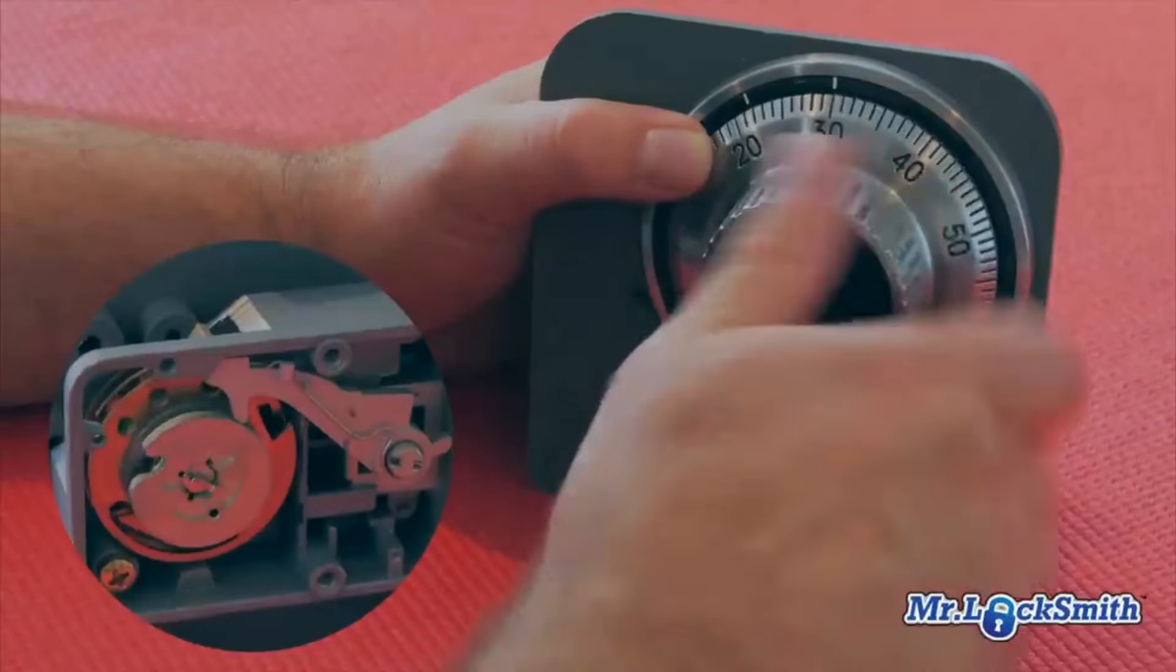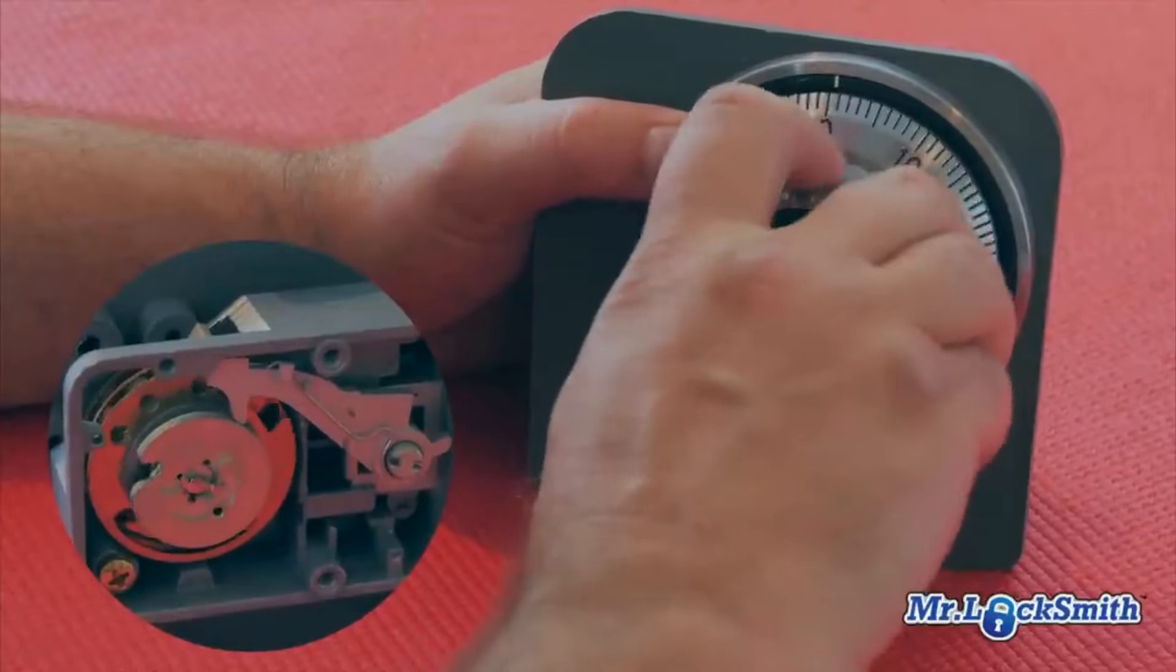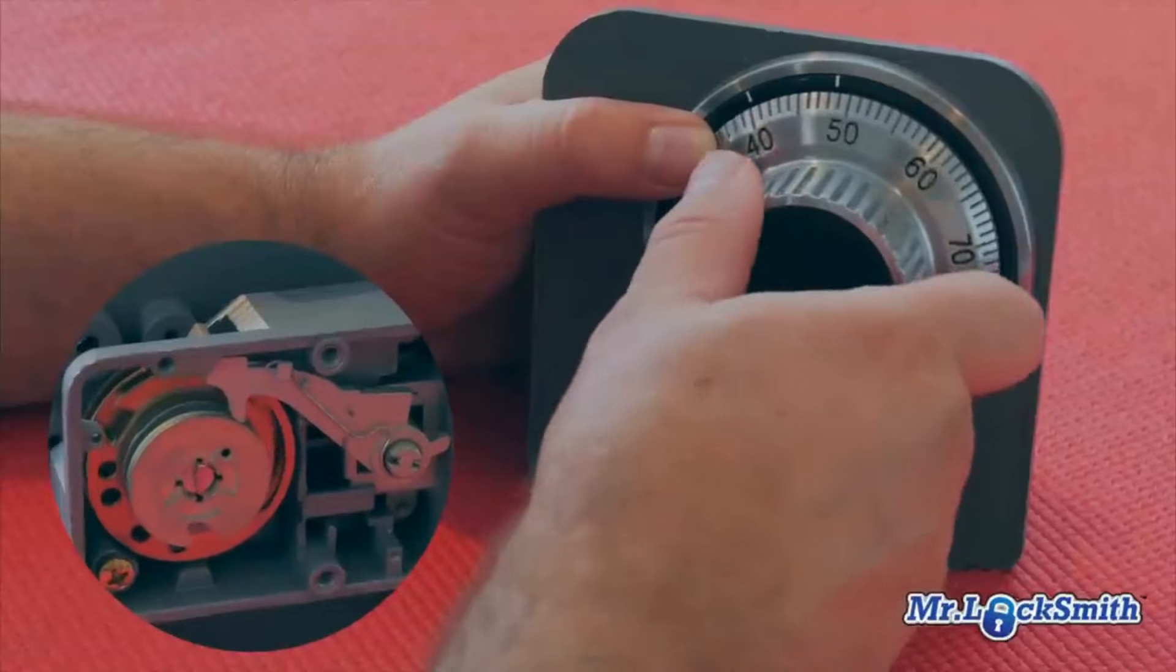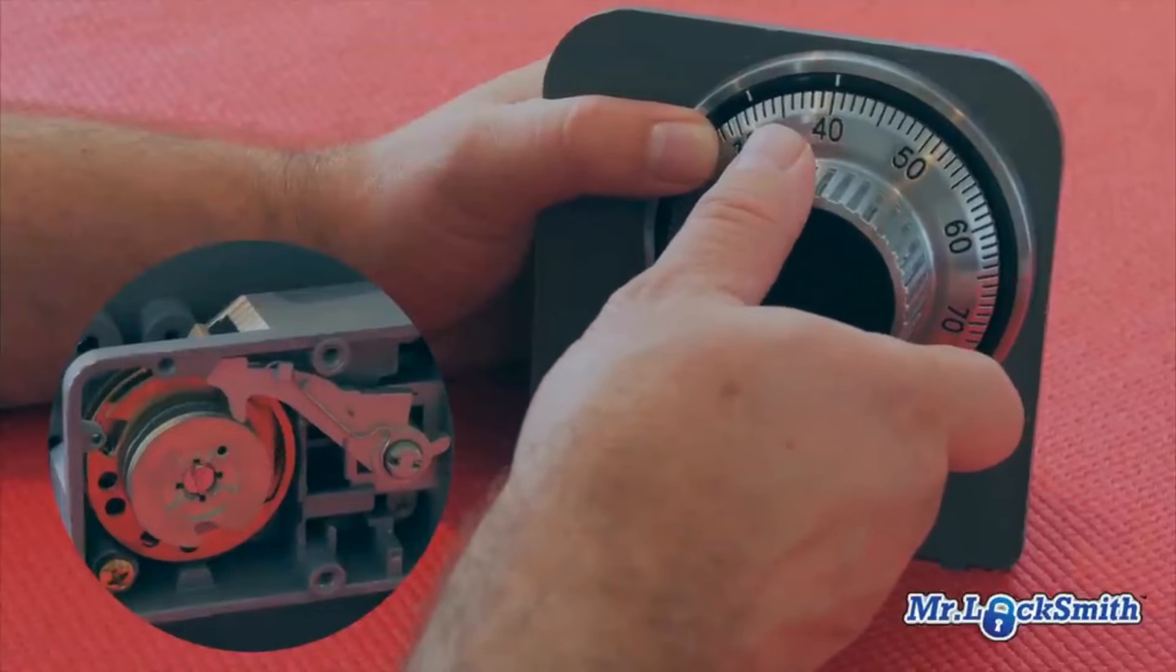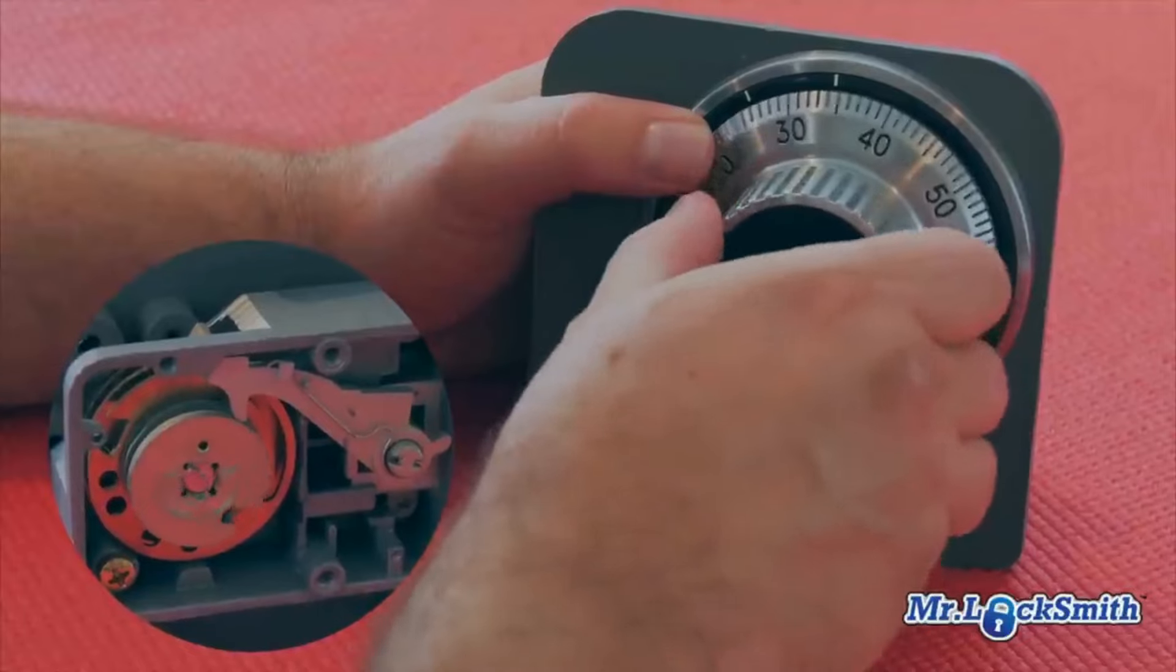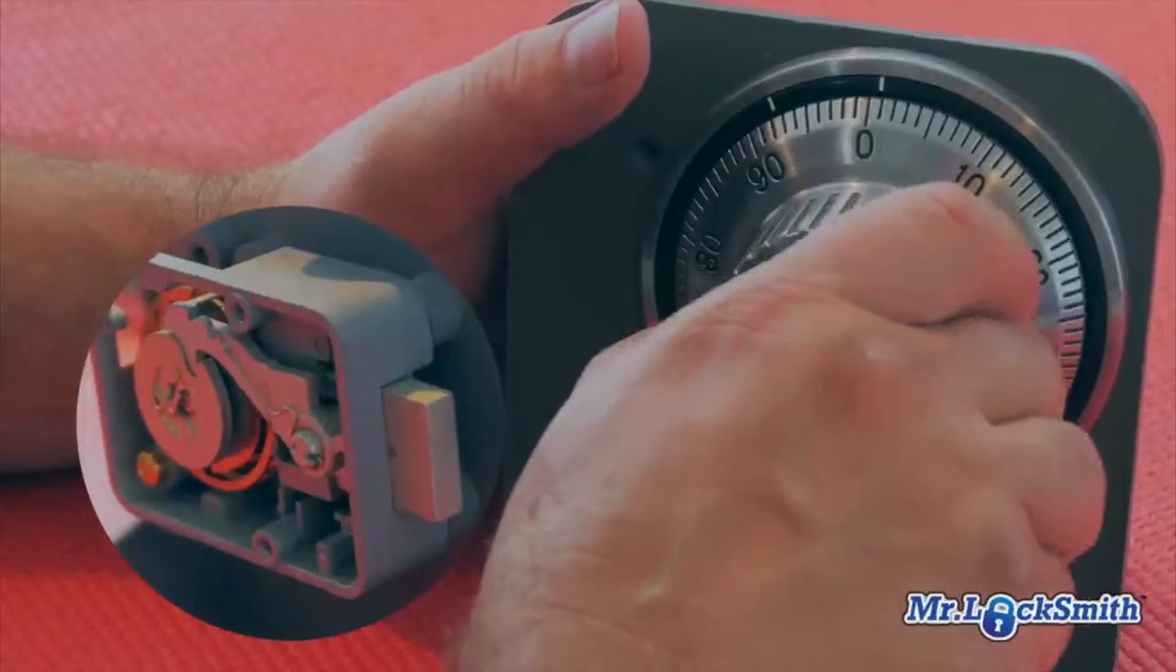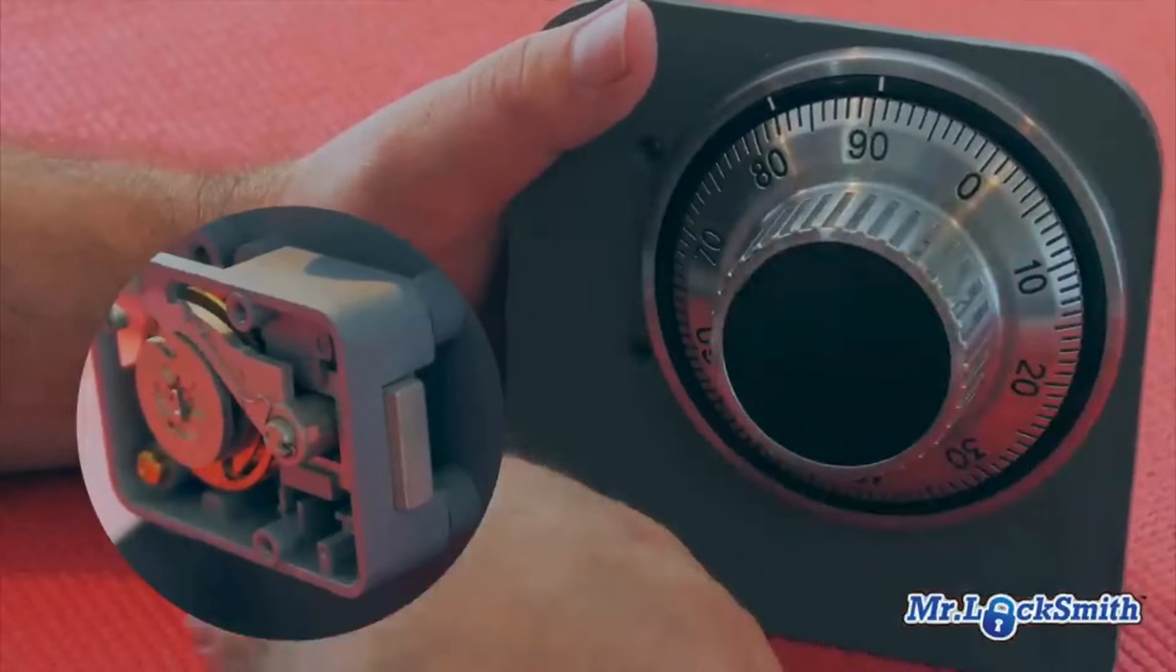Our next number is 60, so we're going to pass it once, stopping on the second time. Now we go gently right to open until she stops. The safe is open.